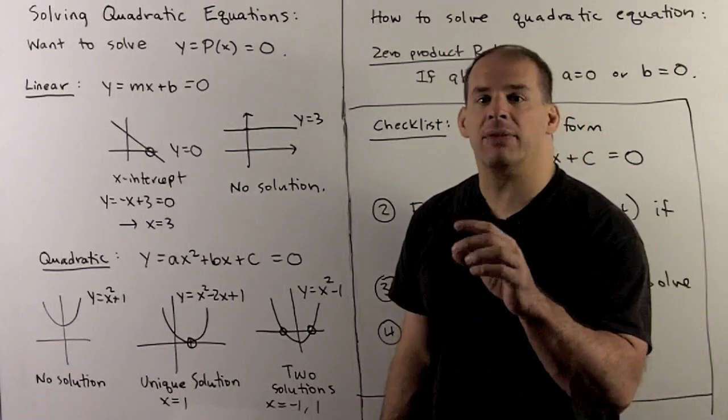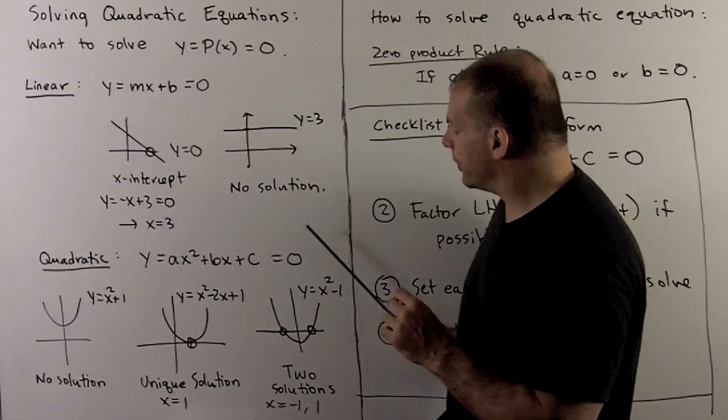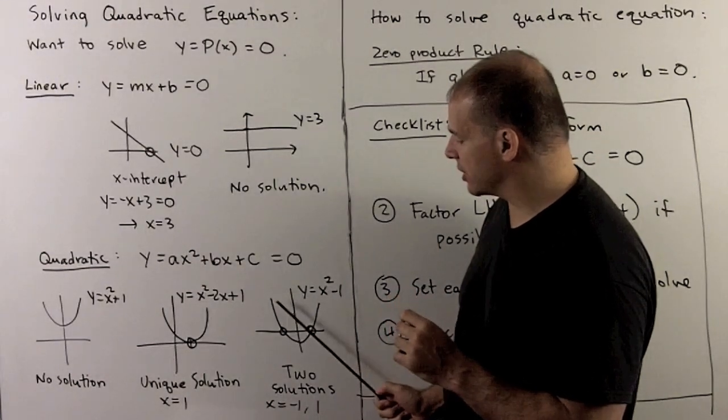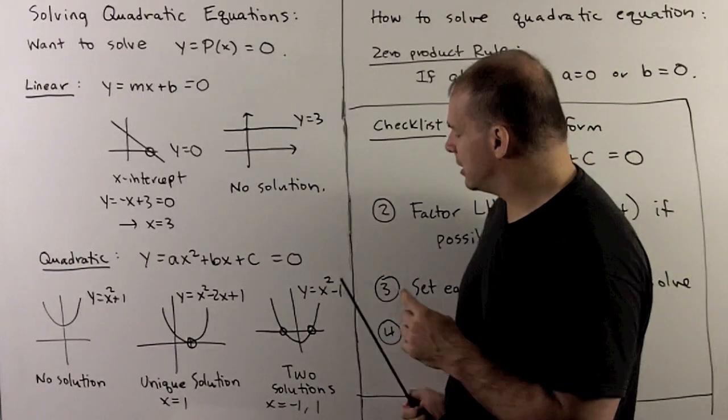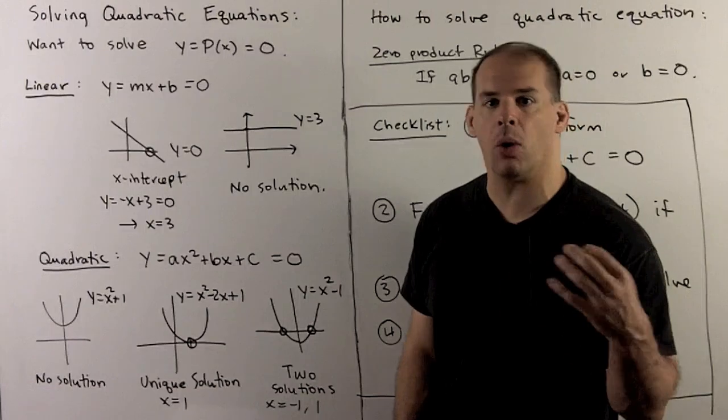Finally, we could have two solutions. So this would be where our parabola is partly above and partly below the x-axis. For instance, if I had y equals x squared minus one, to get a zero here, I could put in either a one or a minus one, and then no others work.